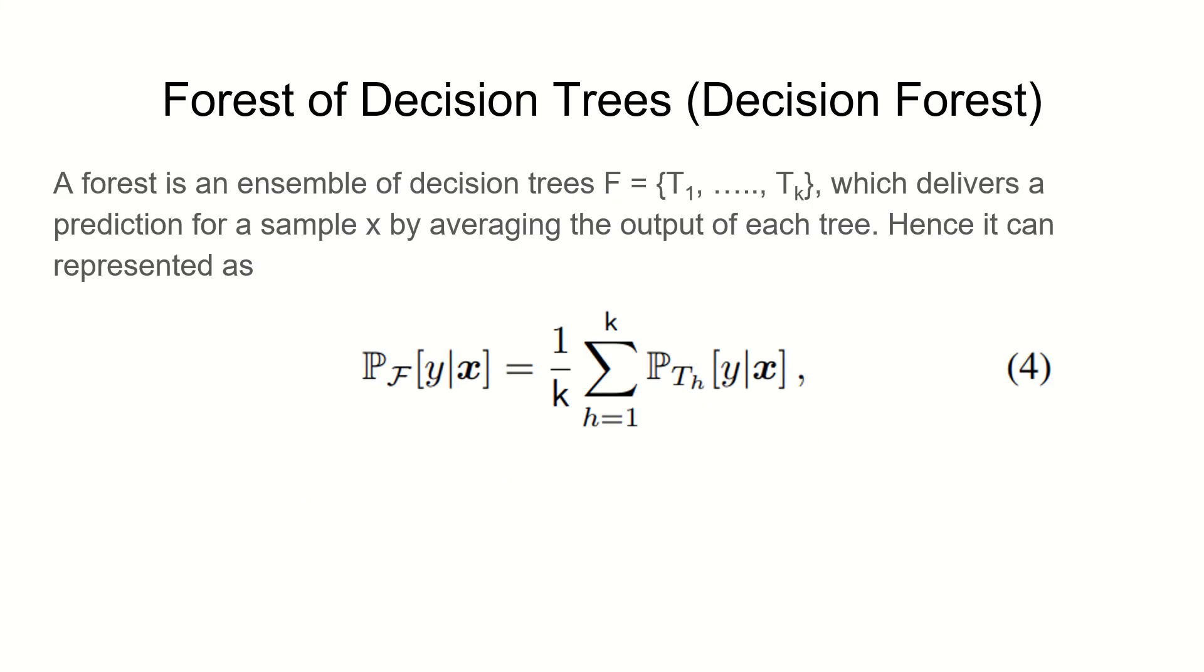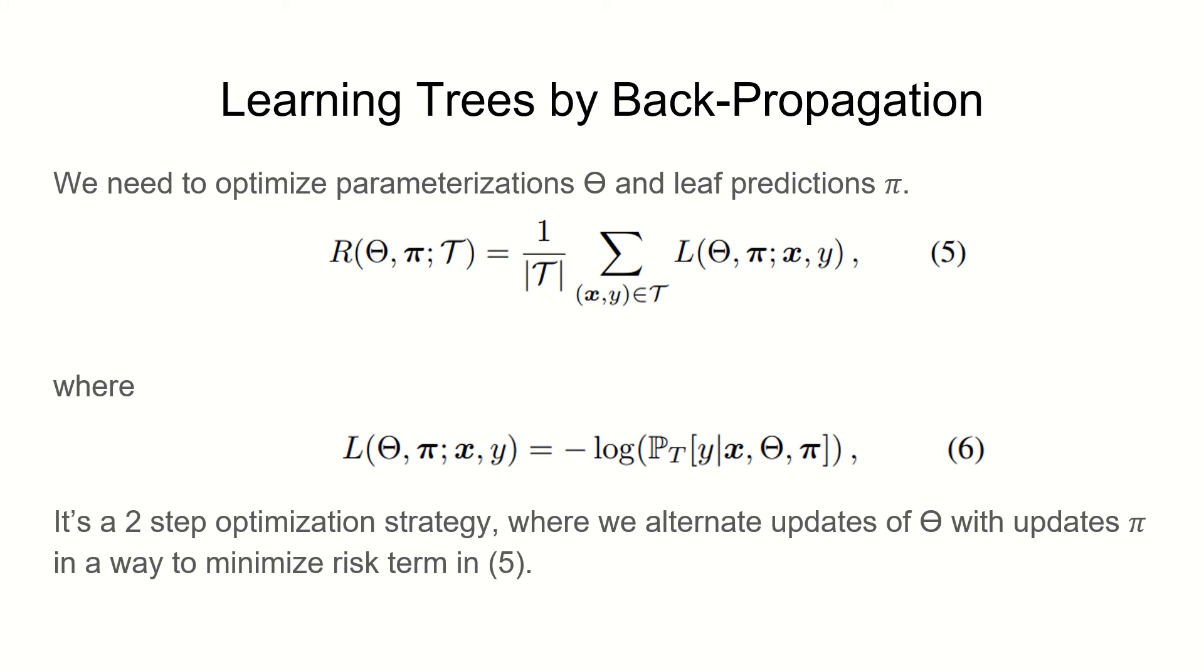As of now we are dealing with one decision tree. A bunch of decision trees combined becomes a decision forest. As I explained before, we average the output of all trees to get the forest prediction. Now let's see how we can introduce back propagation into learning trees.